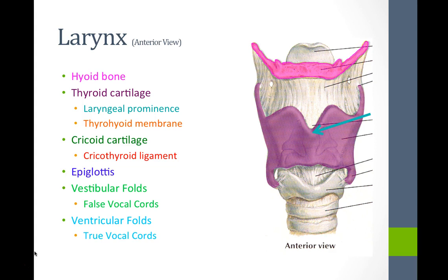Your thyroid cartilage is open posteriorly. The cartilage below it is called the cricoid cartilage, which is closed posteriorly — forming a full ring around the larynx — and attaches between the thyroid and cricoid cartilage. The epiglottis sits posterior to the hyoid bone and thyroid cartilage, and the vestibular and ventricular folds are not visible in this anterior view, so we'll look at those shortly.